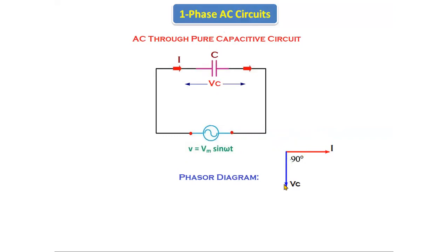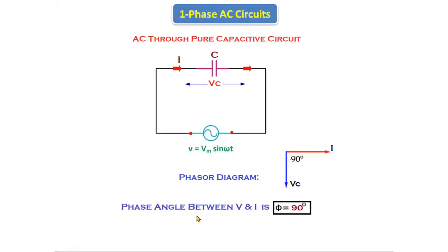Current leads the voltage by 90 degrees. In the inductive circuit we saw that current lags the voltage by 90 degrees, but here in the capacitive circuit, current leads the voltage by 90 degrees. From this we can say that the phase angle between voltage and current is phi equal to 90 degrees.